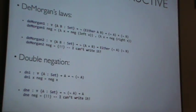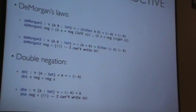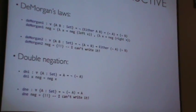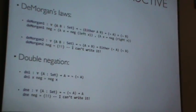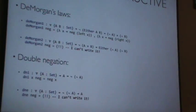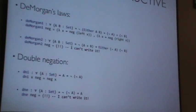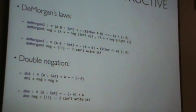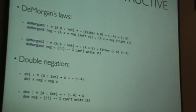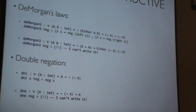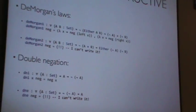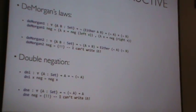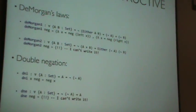Coq also does that simply by separating propositions from sets. You can say: I can put double negation elimination into Prop because I'm not going to have to produce any real values from it. Coq's logic and Agda's logic aren't importantly that different in that case.